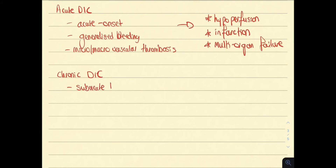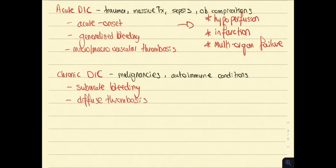Chronic DIC is subacute, and patients usually present with diffuse thrombosis. Causes of acute DIC include trauma, massive transfusions, sepsis, and obstetric complications, whereas causes of chronic DIC include malignancies and autoimmune conditions.